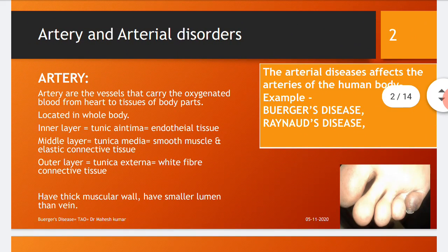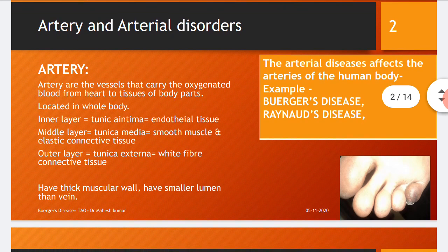Before describing Buerger's disease, you should know the basics about arteries and arterial disorders. Arteries are vessels that carry oxygenated blood from the heart to the tissues of body parts. They are located throughout the whole body and are made up of three layers on an anatomical basis: inner layer, middle layer, and outer layer.